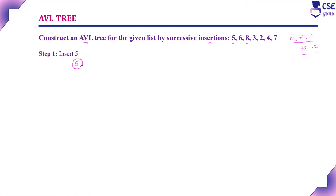Step 1: we have to insert element 5. Since there is only one element, no need to check anything. AVL tree is a height-balanced binary search tree, so whenever you perform insertion, we check it should be a binary search tree and also height-balanced. With only one element, the conditions are trivially satisfied.